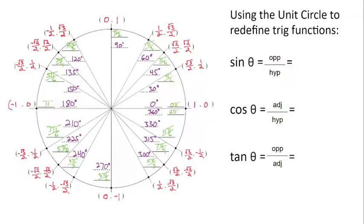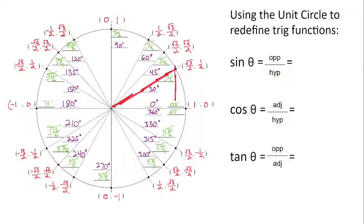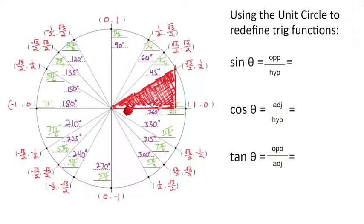First, let me show what this looks like. Previously, we've defined sine theta as opposite over hypotenuse. Let's take a 30-degree angle and draw a little right triangle. For that right triangle with angle theta of 30 degrees, this would be the opposite side, and this would be the hypotenuse.